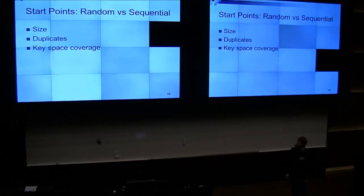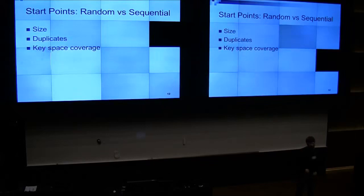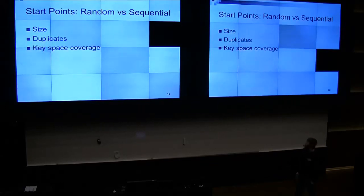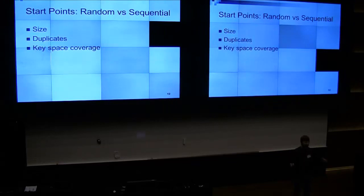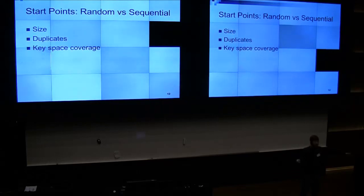Start points: sequential versus random. Basically, random start points are claimed to give better distribution and better coverage of the key space. First thing: size. Sequential start points are going to have a number with a bunch of leading zeros followed by your actual start point. If you have a random start point, it's going to be the size of the key space — log of the key space — number of bits to represent a start point.